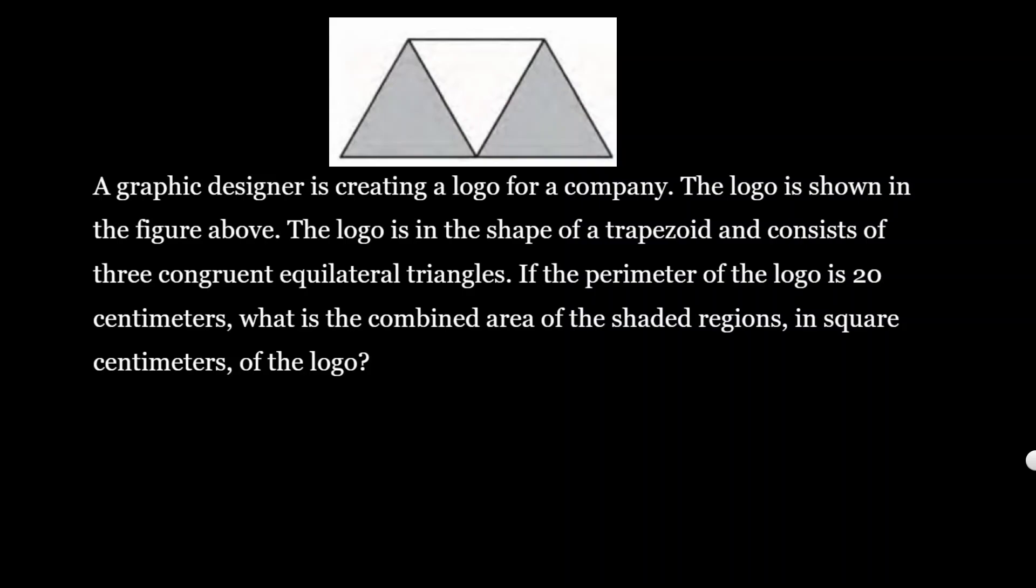Okay, you can pause the video and try this by yourself. They have this logo and it's a trapezoid that consists of three congruent equilateral triangles, so all these sides are congruent. If the perimeter of the logo is 20 centimeters, let's call the whole thing X.